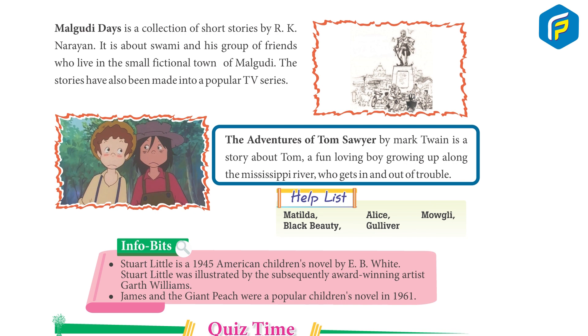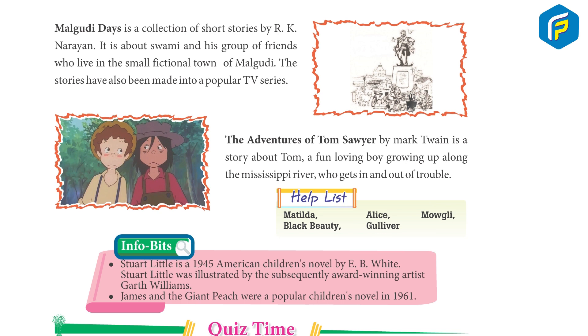The Adventures of Tom Sawyer by Mark Twain is a story about Tom, a fun-loving boy growing up along the Mississippi River who gets in and out of trouble.